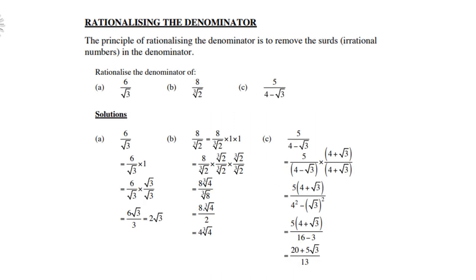Rationalizing the denominator. The principle of rationalizing the denominator is to remove the surd in the denominator, so that surd of course is irrational.